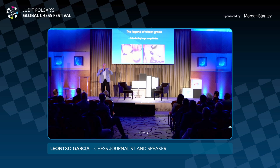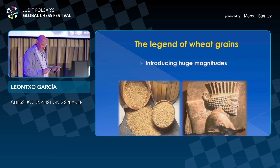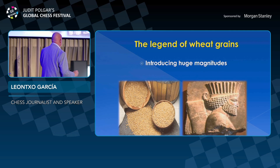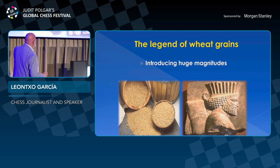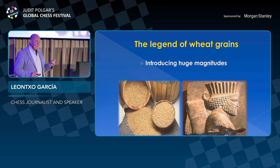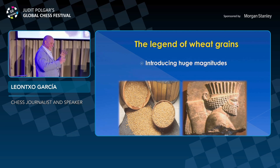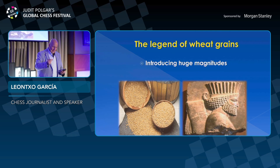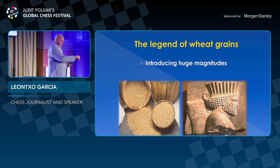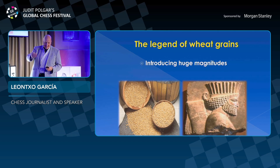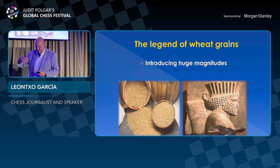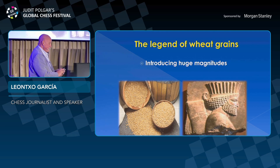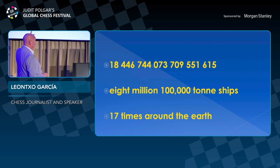I'm not going to tell you the whole story because I don't have time, but if you look it up on the internet you will find it very easily. What is very important to emphasize is that this story helps us to introduce huge magnitudes. If you put one grain of wheat in the first square of the chessboard, two in the second, four in the third, eight in the fourth, and you double the number each time...